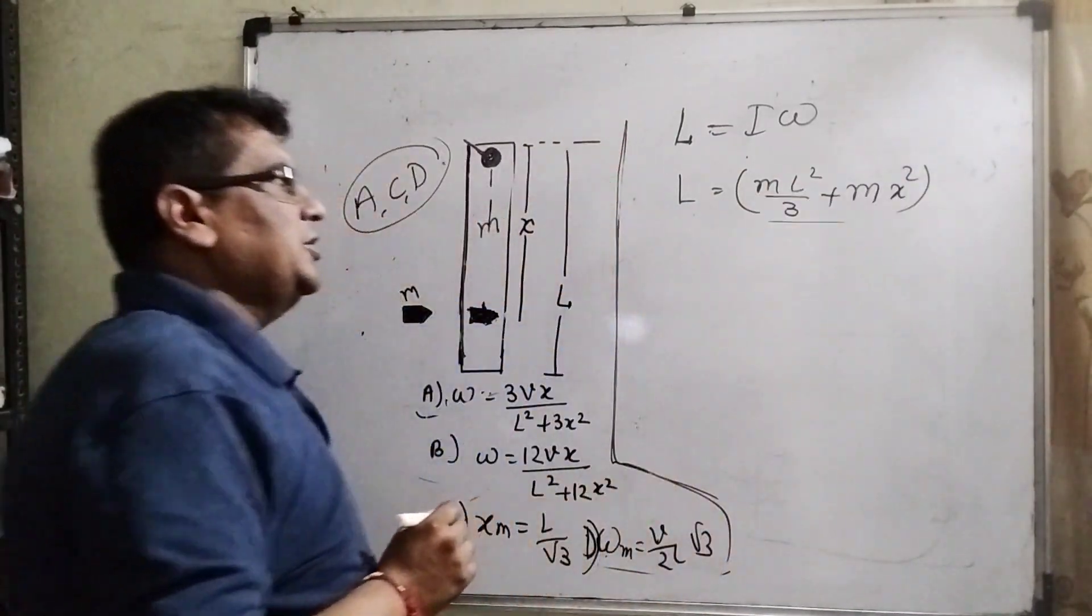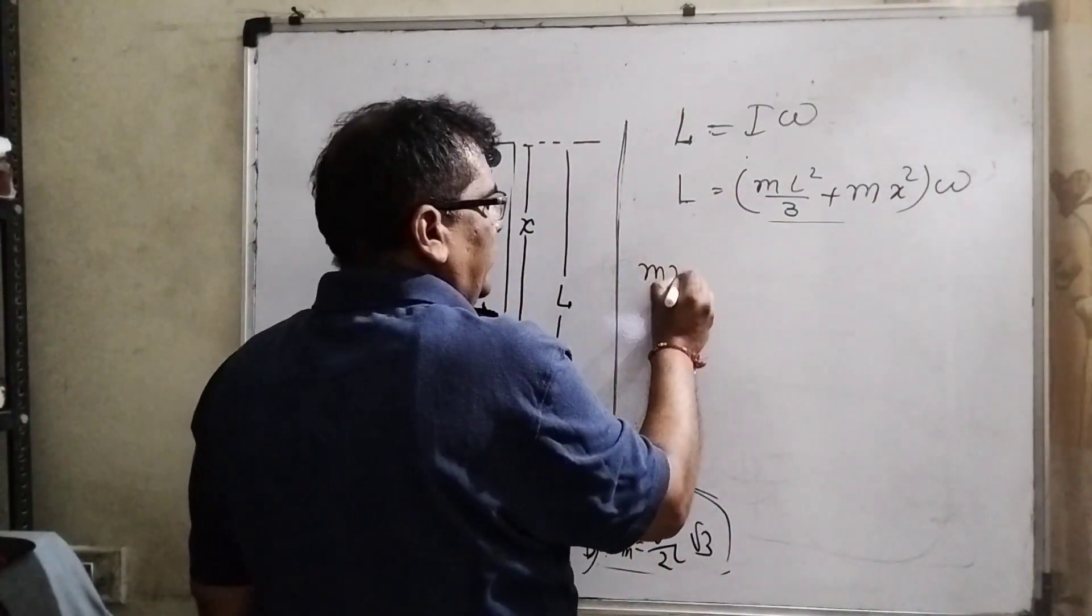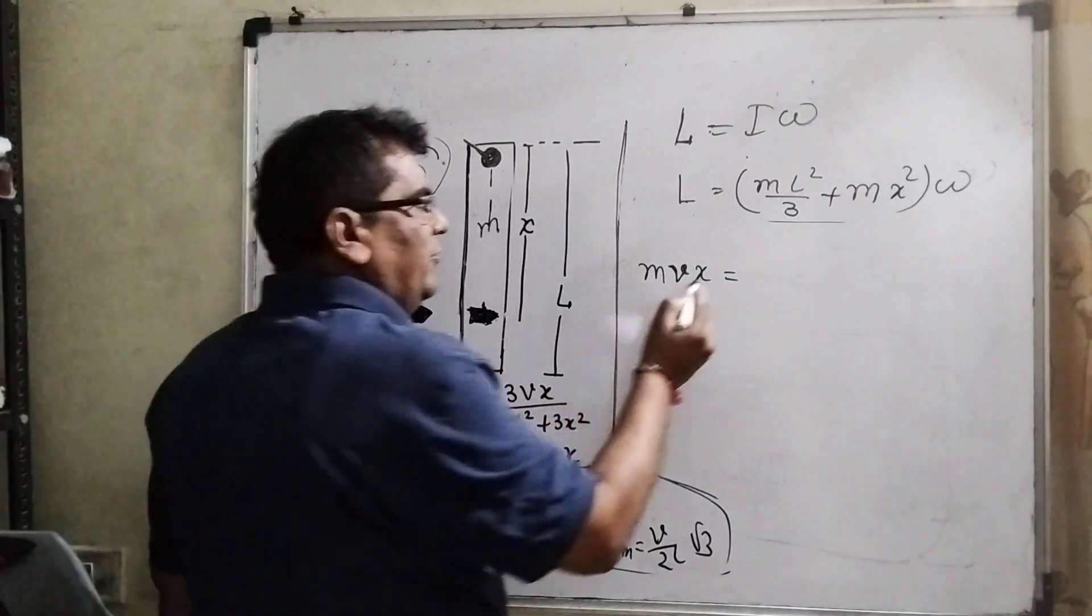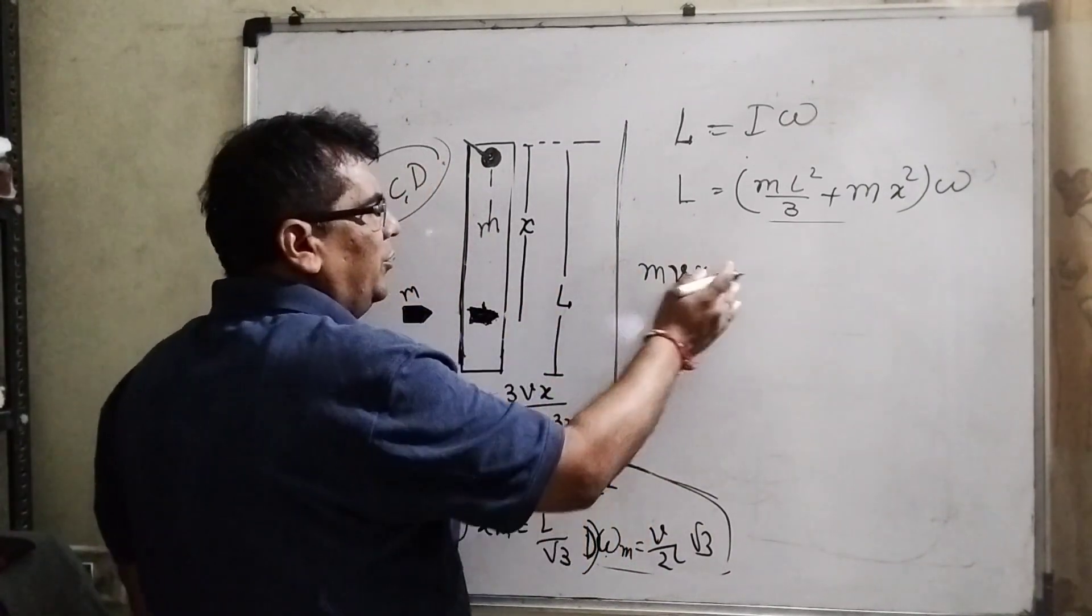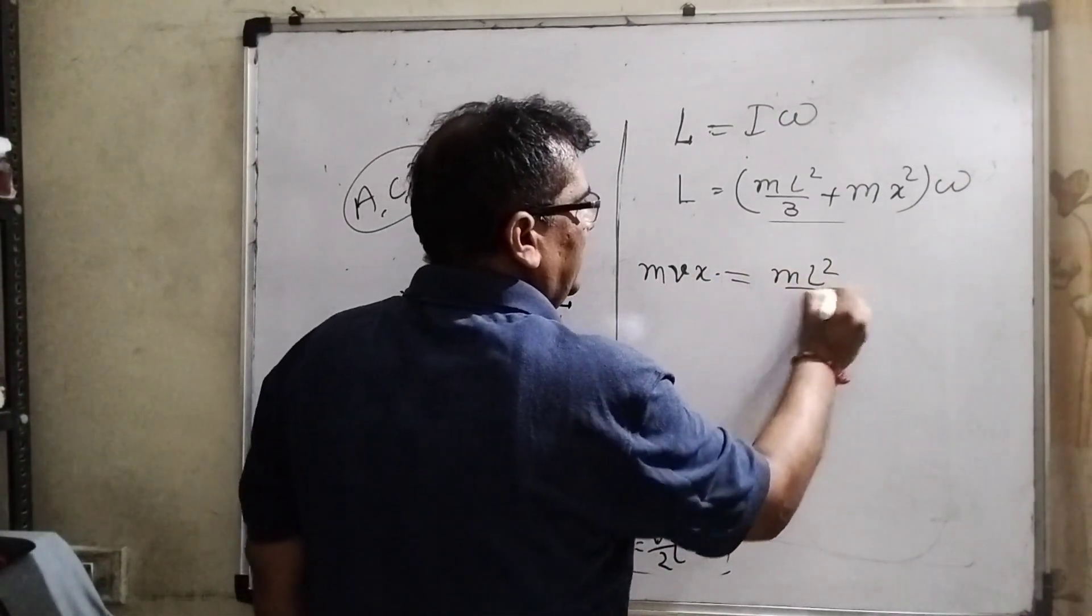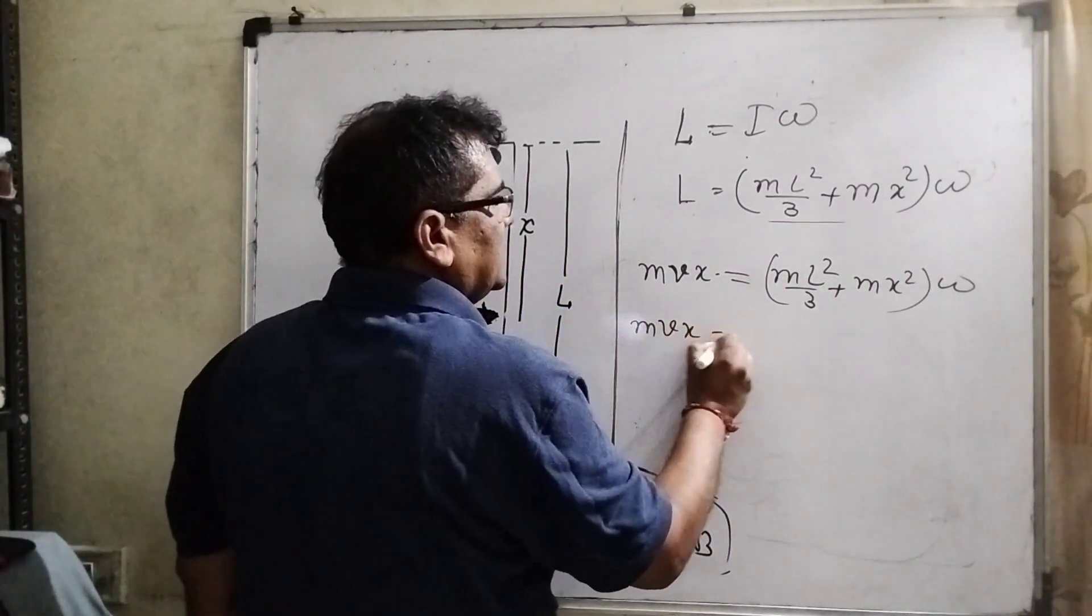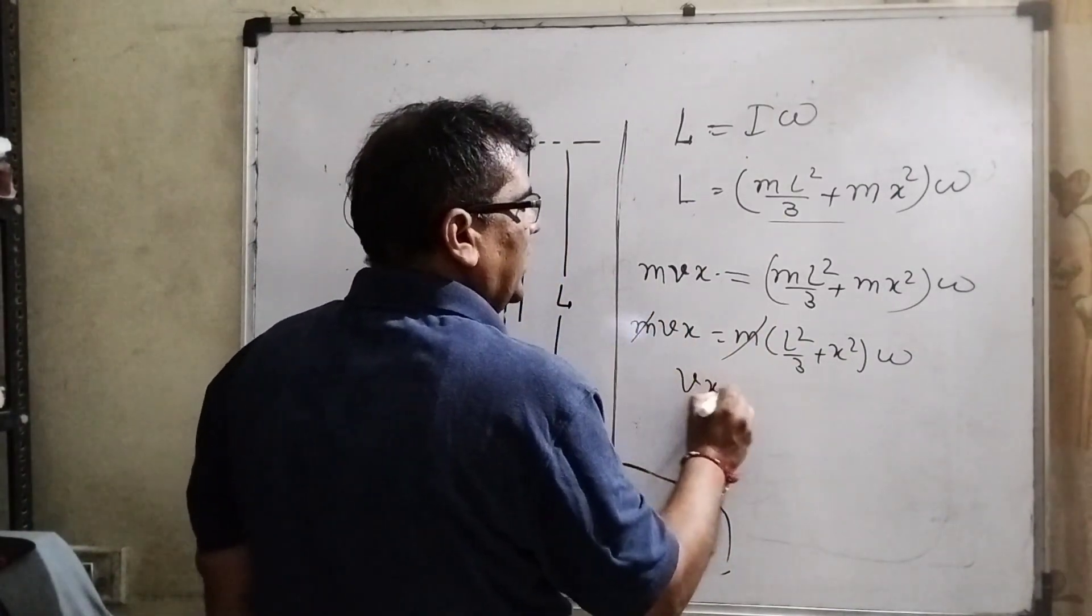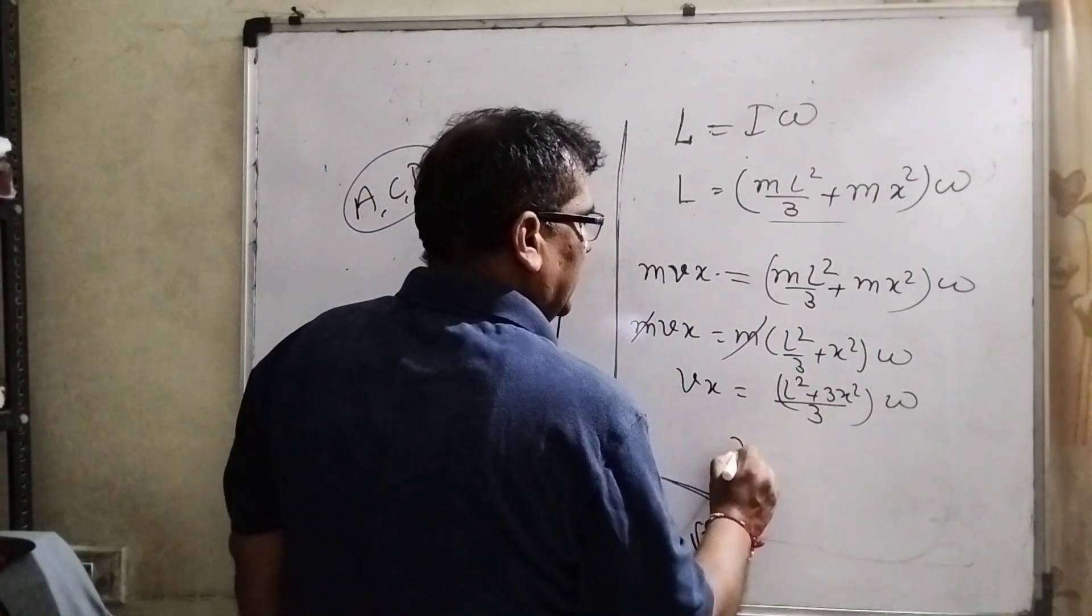And omega - L can be written as mvx. Laws of conservation of momentum, initial and final. Initial is mvx and here the bullet is not strike, so that time bullet is zero. So mvx equals mL²/3 + mx² times omega. m gets common, mvx, cancel out m.